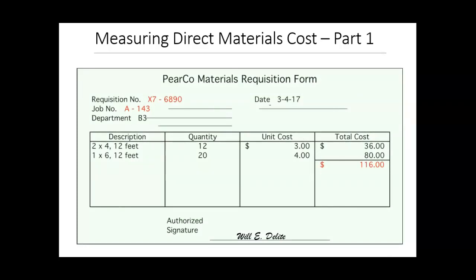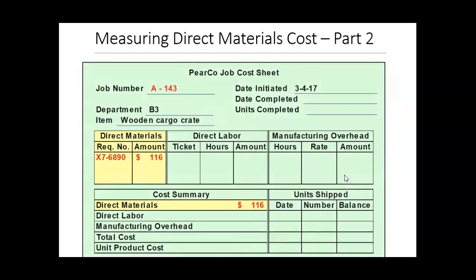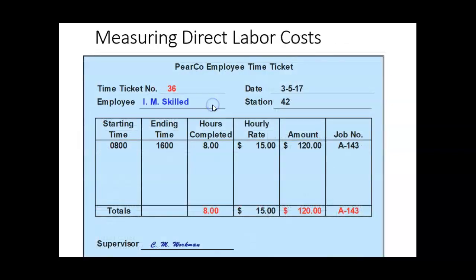We'll first look at the materials purchased for this job: 2x4 12-feet material and 1x6 12-feet material. The total material cost equals $116, which is transferred over to the job cost sheet for job A-143. Then we have our labor costs — the employee spent a total of 8 hours on this job at a rate of $15 per hour, so the total labor cost is $120.